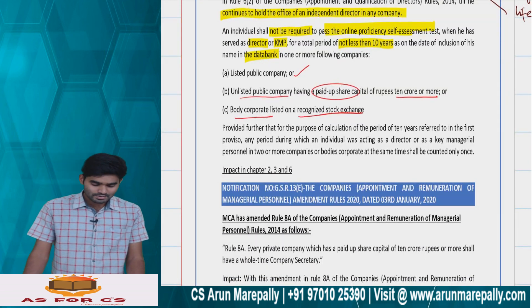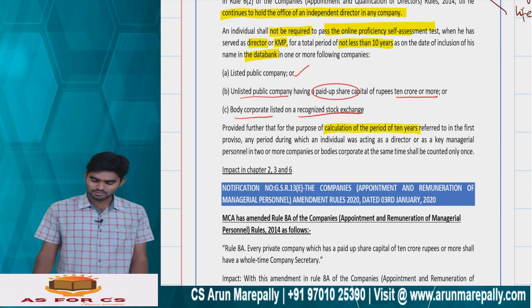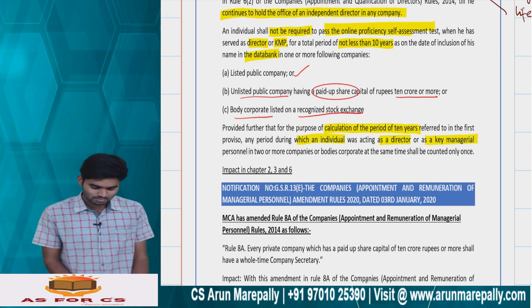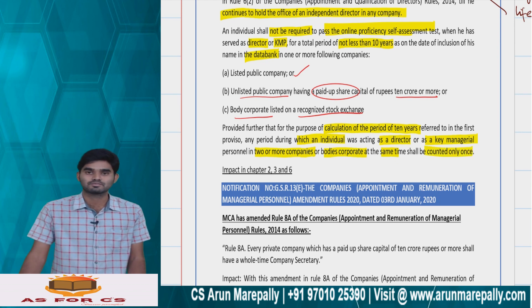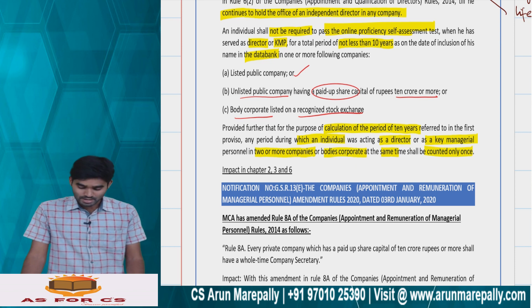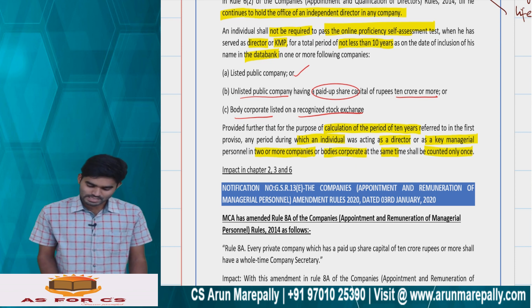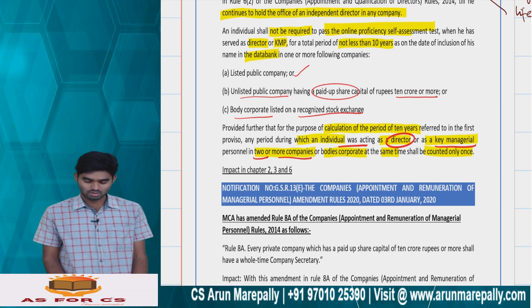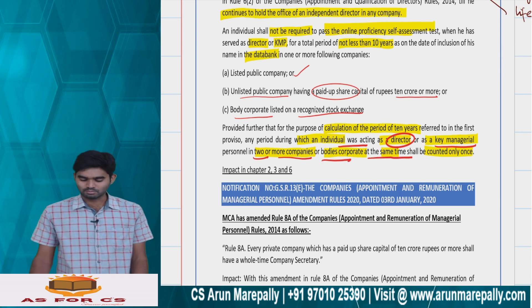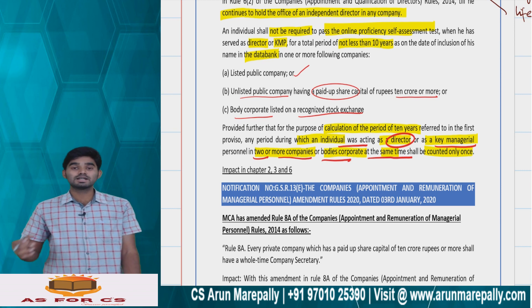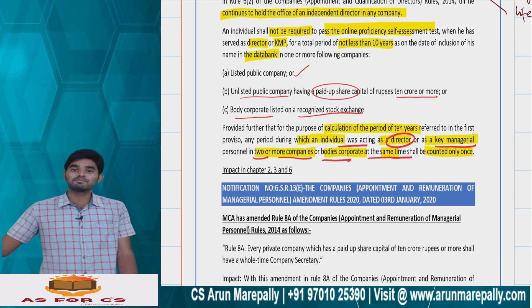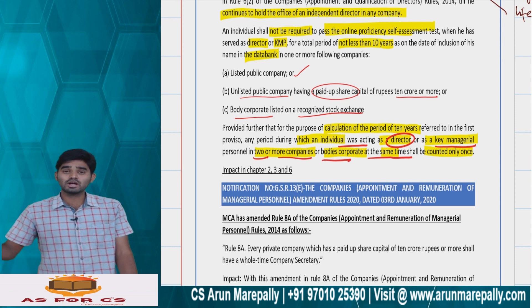For the purpose of calculating the 10-year period: where an individual was acting as a director or KMP in two or more companies at the same time, that period shall be counted only once. For example, if I served as a director in one listed company for five years and as a KMP in another company for six years simultaneously, I cannot combine them to get eleven years — the overlapping period is counted only once.